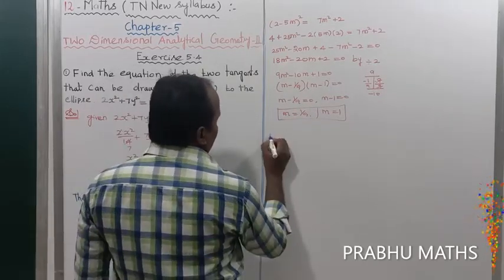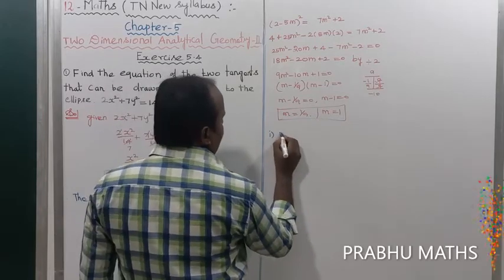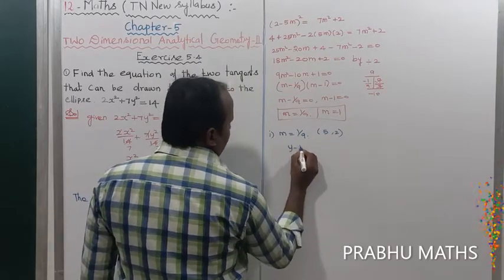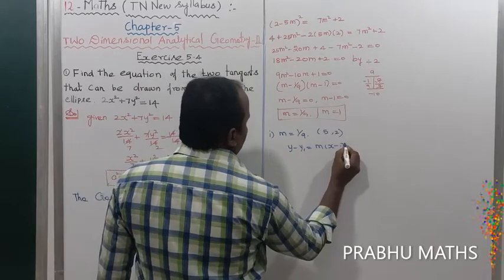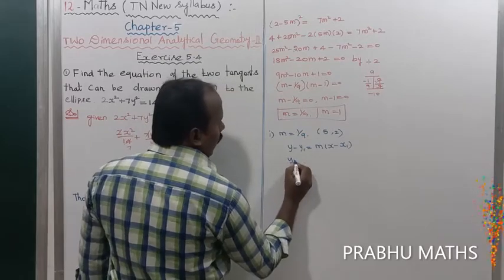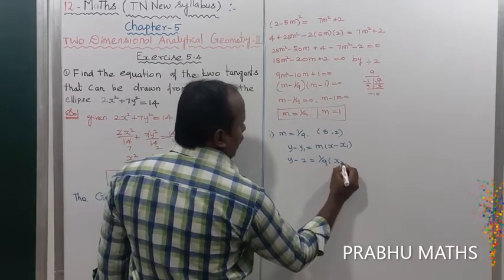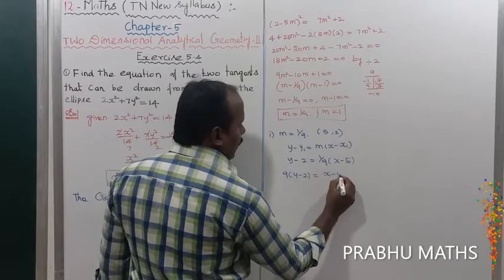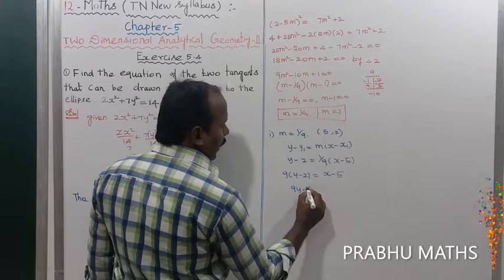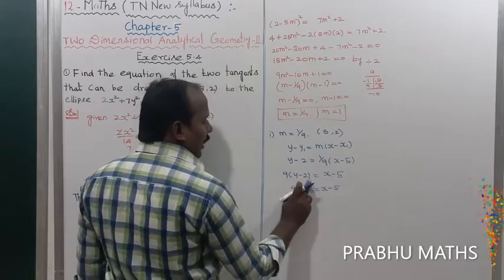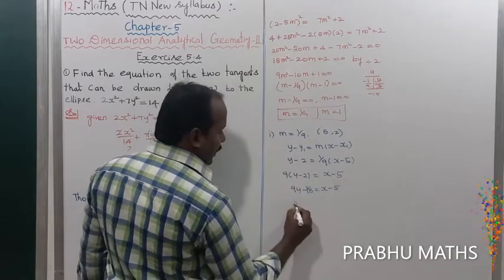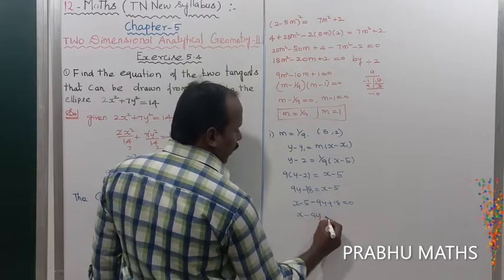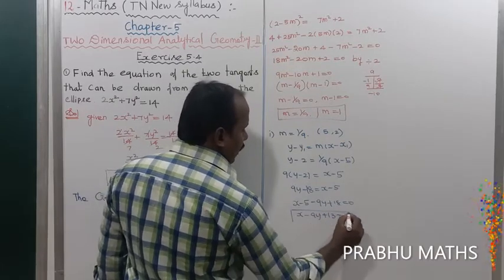For the first tangent equation, using m = 1/9 and point (5, 2): y − 2 = (1/9)(x − 5). Multiplying both sides by 9: 9y − 18 = x − 5. Rearranging: x − 9y + 13 = 0. That is the first tangent equation.